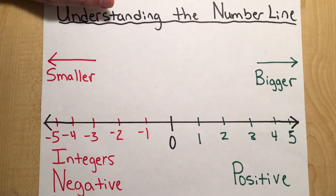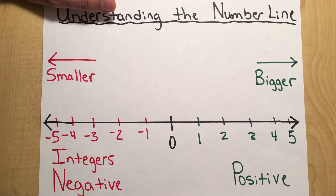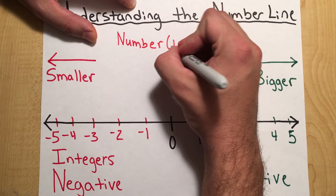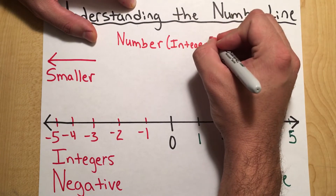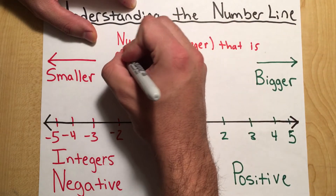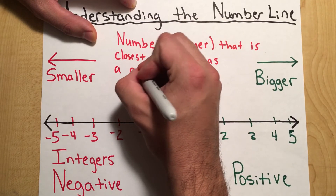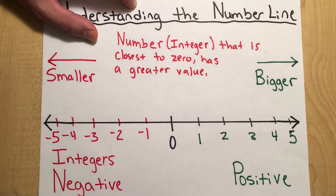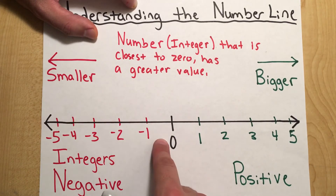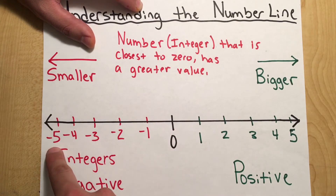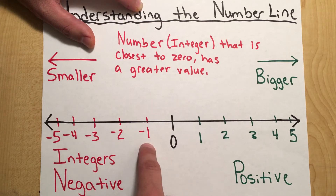One important rule when we're comparing integers and negative numbers — something I tell my students that helps them remember — is that the integer that is closest to zero on the number line has a greater value. For example, if we're comparing negative one and negative five, which one is closest to zero? Negative one is a lot closer to zero than negative five, so the bigger number here would be negative one.